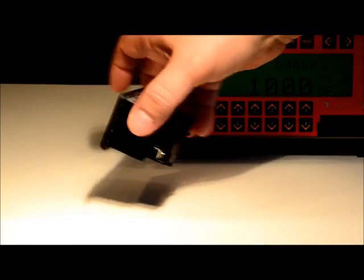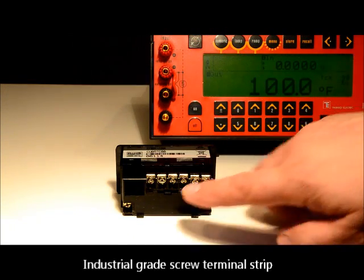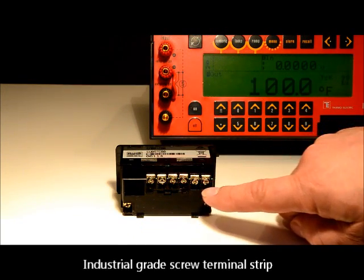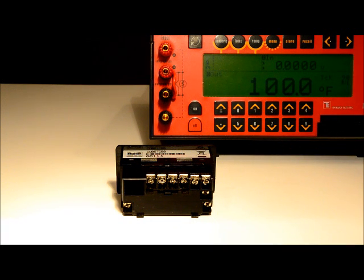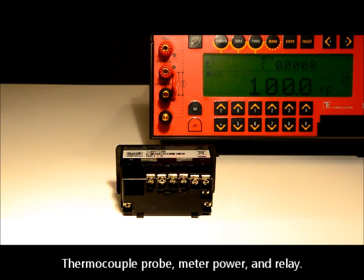At the back of the meter, we find an industrial grade screw terminal strip for securely attaching the wires to the meter. We like screw terminals since they really get a tight hold on the wires, which lessens concern over the wires vibrating loose. These connections encompass all of the meter I/O, including the thermocouple probe, meter power, and relay.